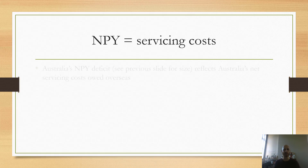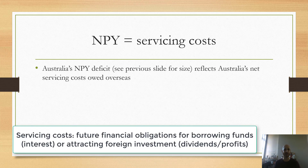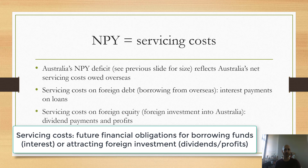When we think about net primary income, we're thinking about the servicing costs Australia owes overseas. In particular, the servicing costs on foreign debt — so borrowing from overseas — are interest payments on loans, and that is recorded in NPY. We also have servicing costs on foreign equity, so foreign investment into Australia, which are dividend payments and profits. So NPY is about the servicing costs of capital inflows onto the capital and financial account.